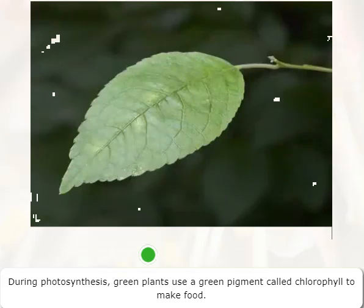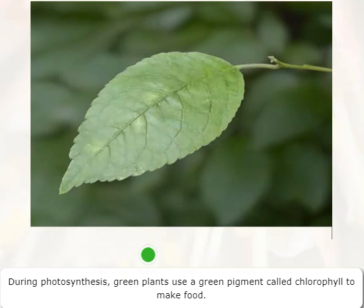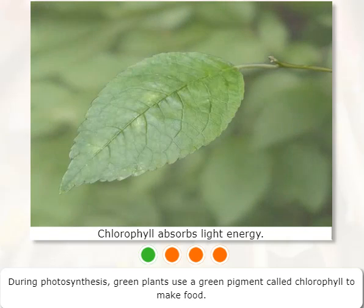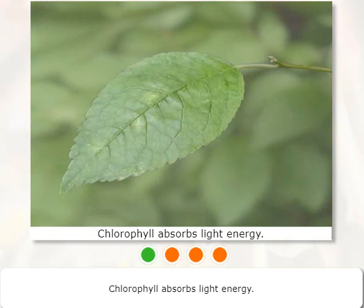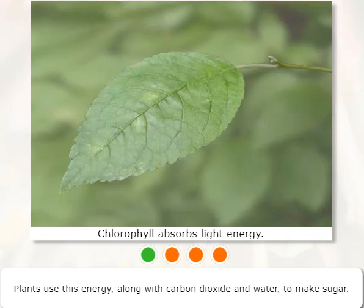During photosynthesis, green plants use a green pigment called chlorophyll to make food. Chlorophyll absorbs light energy. Plants use this energy along with carbon dioxide and water to make sugar.